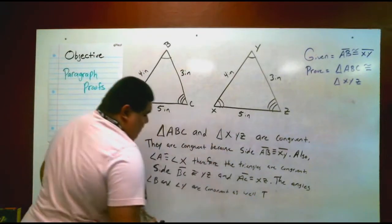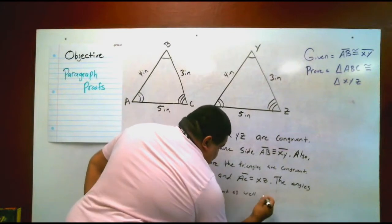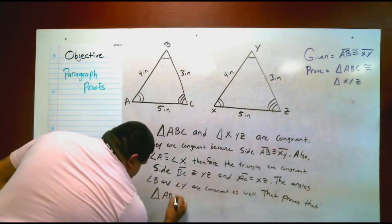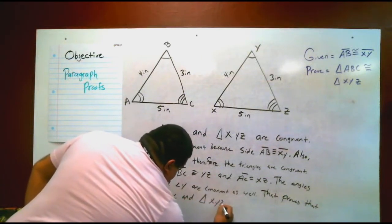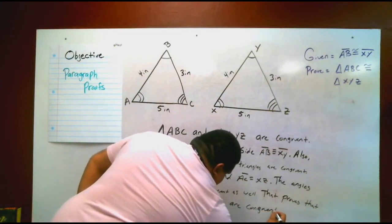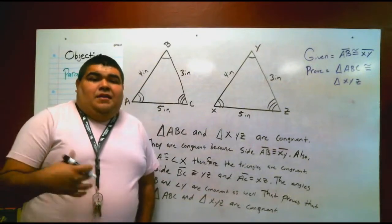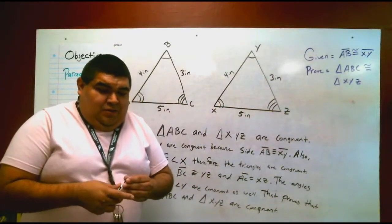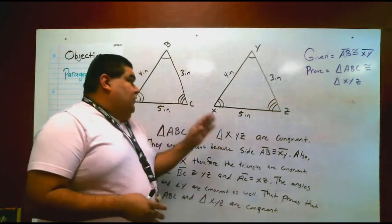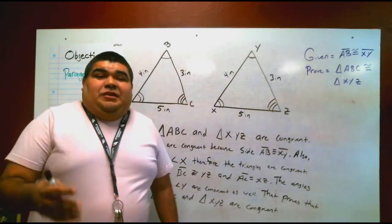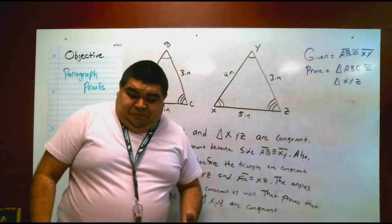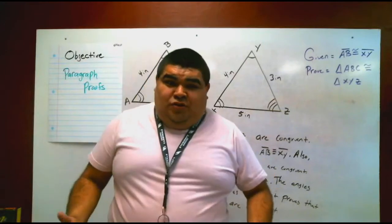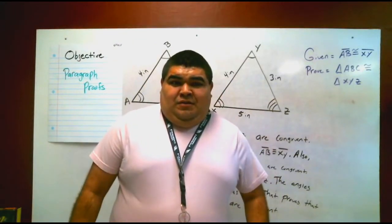Therefore, or I can say that proves that triangle ABC and triangle XYZ are congruent. Obviously I'm not going to continue going. We could have said the angle C and angle Z are congruent as well. We could have said that both triangles are isosceles because all sides are different, we could have used because of proportions. So there's many different things we could put in here. Obviously I'm going to stop there. You guys get the point. You guys have to write a paragraph of why two triangles are congruent, or two shapes are congruent.